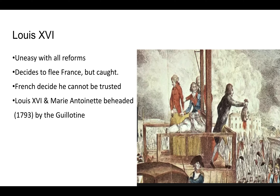Seeing what's going on in his country, Louis XVI is very nervous and uneasy with all the reforms — he's lost his power and doesn't know what will happen next. He decides to follow the path of the émigrés and tries to flee France. He disguises himself, him and his family, and tries to leave. Unfortunately for him, he is caught — someone spots him and his wife, Marie Antoinette.